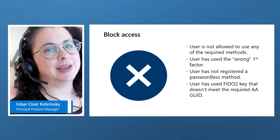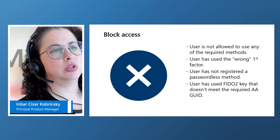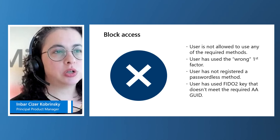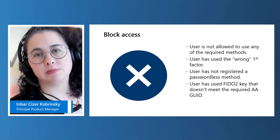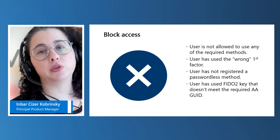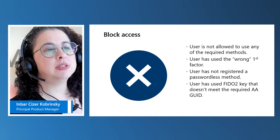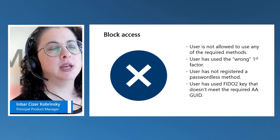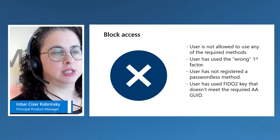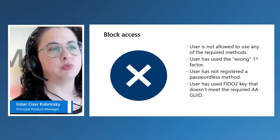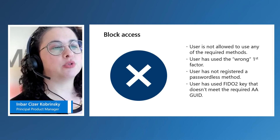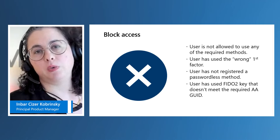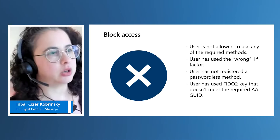In that case, the user will get a friendly end-user error message instructing them to restart the session and choose Windows Hello for Business. The next scenario is the user might not have registered a passwordless method. Depending on the method, you may want to make sure the user is registering for passwordless phone sign-in in advance, or for certificate-based authentication that you've placed the certificate on the user device, so they can sign in with those methods. Finally, for FIDO2 or passkey restrictions for specific AAGUIDs, if the user has used a key that doesn't meet those criteria, we will block them and not allow their access.